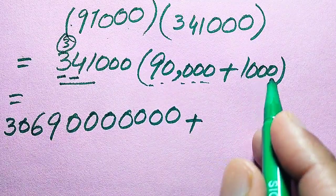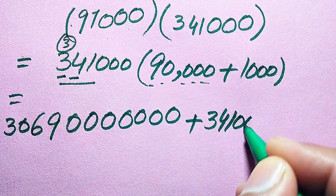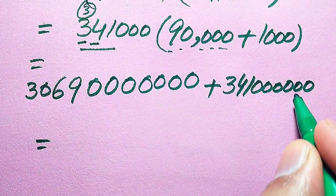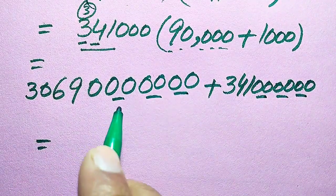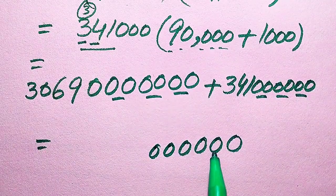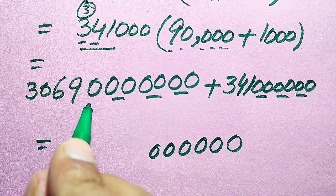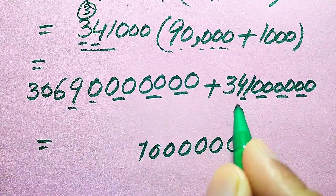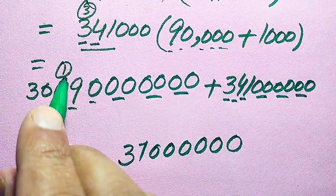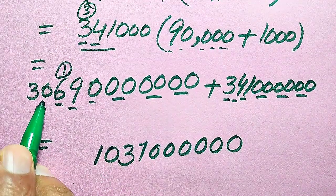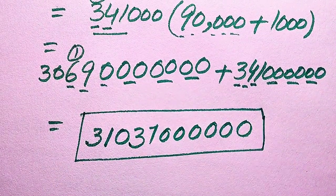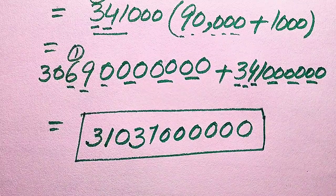Multiplying 341,000 by 1,000: write three zeros, giving 341,000,000. Now summing both results: adding the six trailing zeros gives six zeros. Then 0+1=1, 9+4=13 write 3 carry 1, 6+3+1=10, giving the final answer of 31,031,000,000. This is the final simplified form of the given expression. Thank you so much for watching — please subscribe to my channel for more exciting videos.